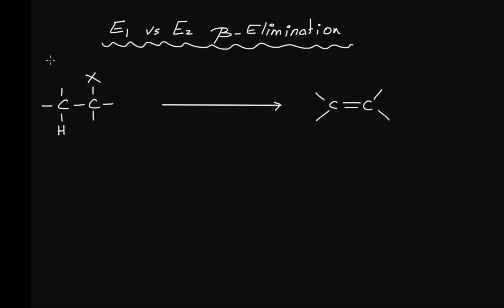Hi guys, this is Dr. Hayek, and in this video I will be introducing the difference between E1 and E2 beta elimination. An elimination by definition is a reaction that produces a pi bond. This reaction happens through an elimination of a hydrogen and a halogen on an alkyl halide, and this is known as a dehydrohalogenation.